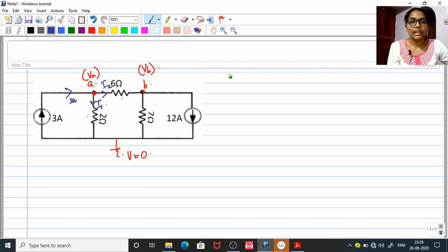Now let us start writing the equation. Keep in mind that if it is outgoing current, make a positive sign. And if it is an incoming current, go for a negative. So at node A, what happens? Please see, 3 amps is incoming, so negative 3.